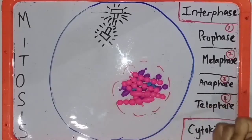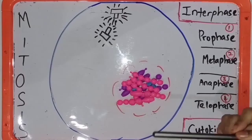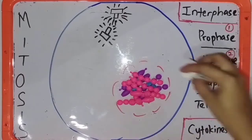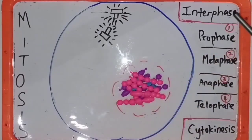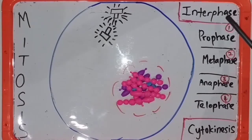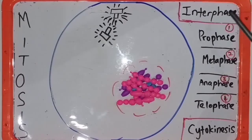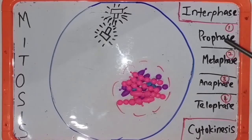This means the chromosomes cannot be seen clearly. Remember, interphase is one part of the cell cycle and is not a stage of mitosis, but the cell should go through interphase before it divides by mitosis. Let's look at the first stage of mitosis, which is the prophase stage.